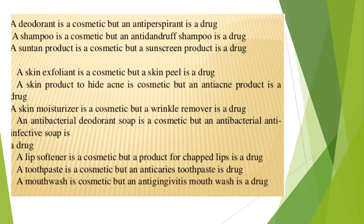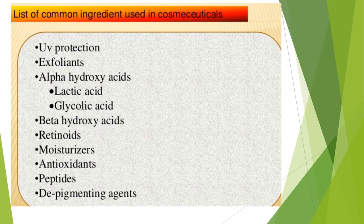Here is the list of common ingredients used in cosmeceuticals: UV protection, exfoliants, alpha hydroxy acids — examples: lactic acid, glycolic acid — beta hydroxy acids, retinoids, moisturizers, antioxidants, peptides, and depigmenting agents.